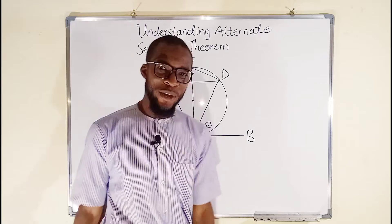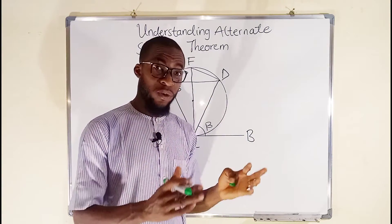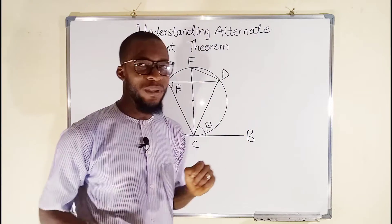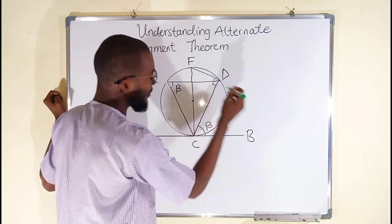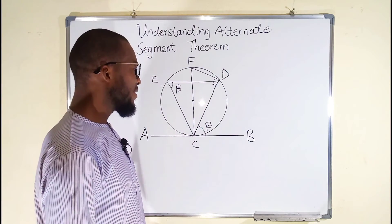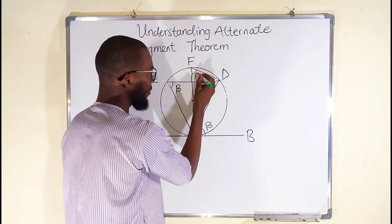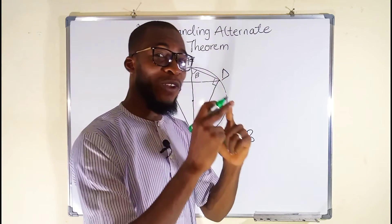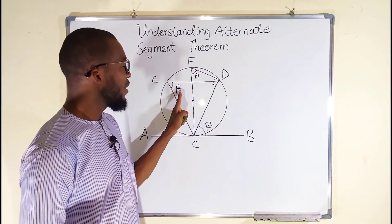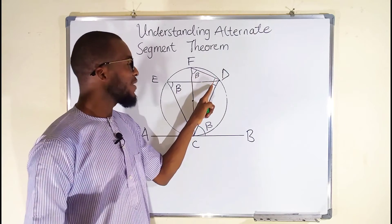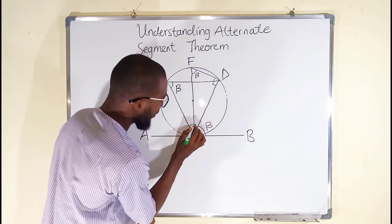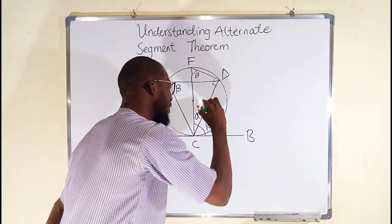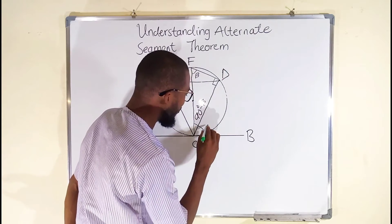Let's go back to circle theorems. One of the properties of a chord is that if a diameter — because a diameter is also a chord — subtends an angle to the circumference, the angle formed is 90 degrees. Therefore this angle right here is 90 degrees. Remember that this angle is also beta, because all angles subtended to the circumference from the same chord are equal. So if this is beta, this must also be equal to beta. Since this angle is 90 degrees, we have a right angle triangle, and this angle added to beta gives 90 degrees. Therefore this angle is 90 degrees minus beta. Let's call it x.